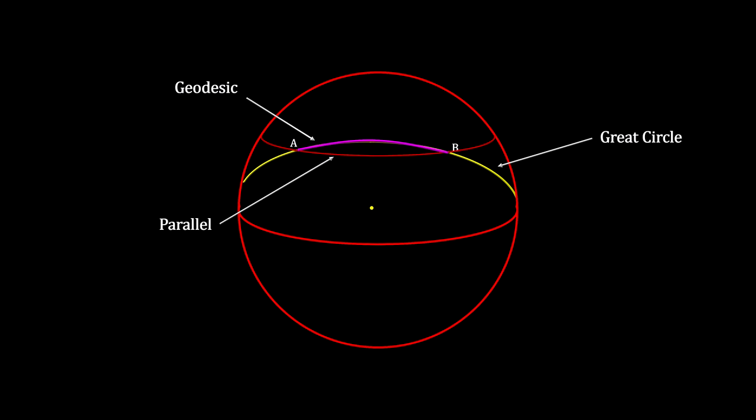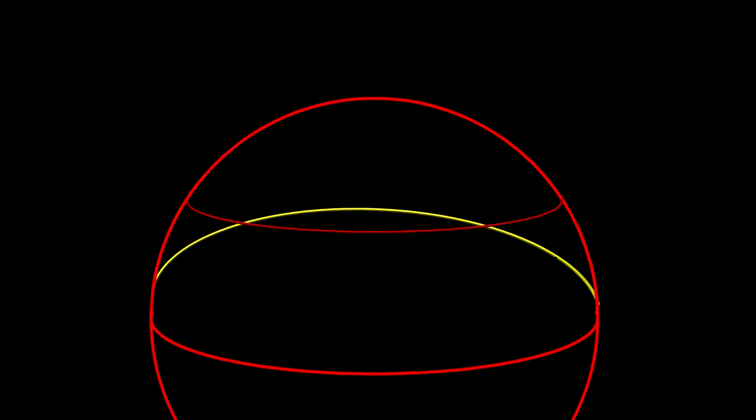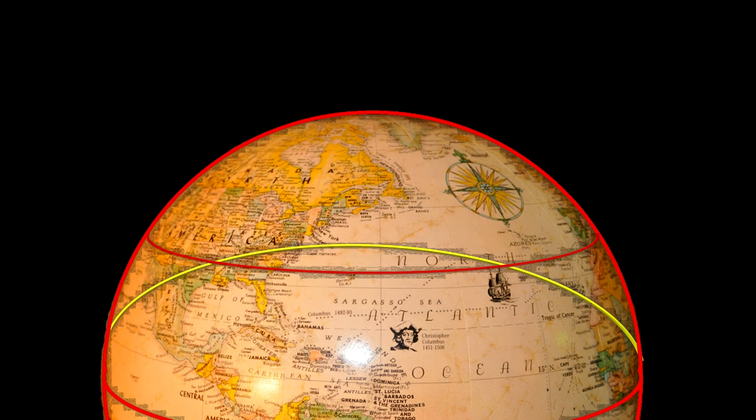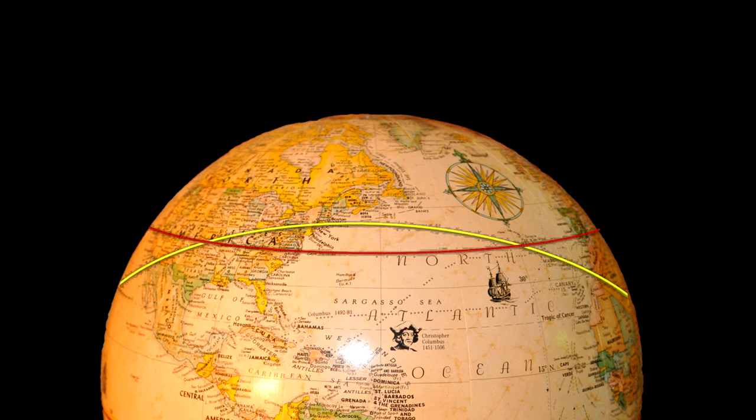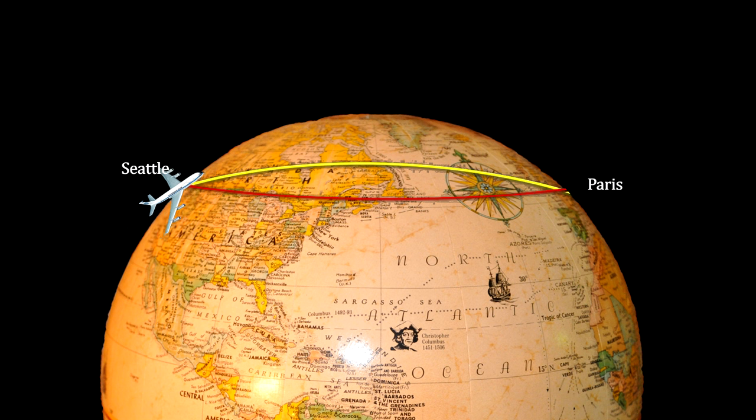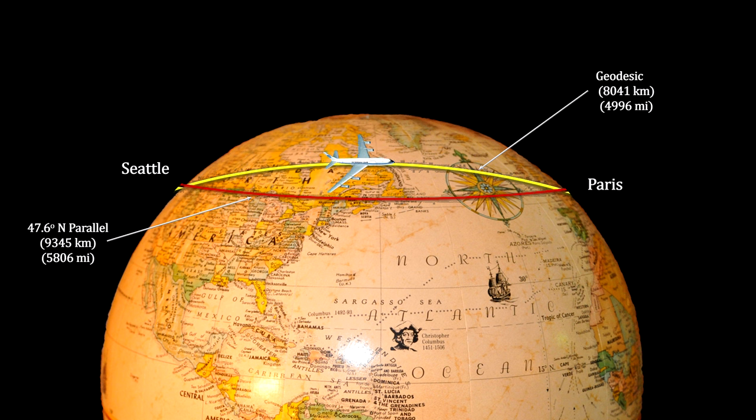A parallel of latitude line between the two points would be longer. This is why planes in the northern hemisphere travel north and then back south to get to a destination at the same latitude, rather than travel due west or due east. They have chosen the shortest distance between the two points, to save on both time and fuel. Some geodesic routes can save up to a thousand kilometers.